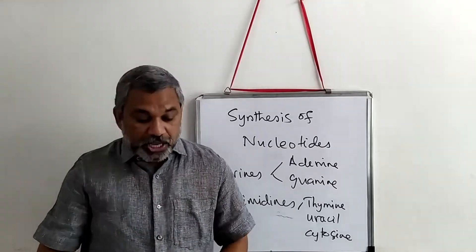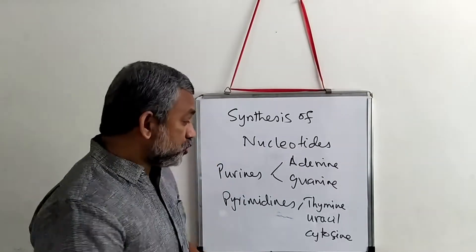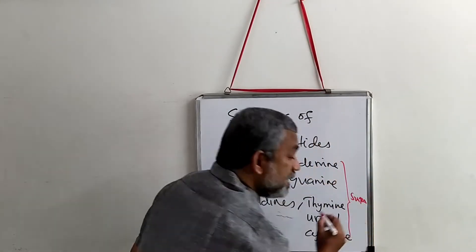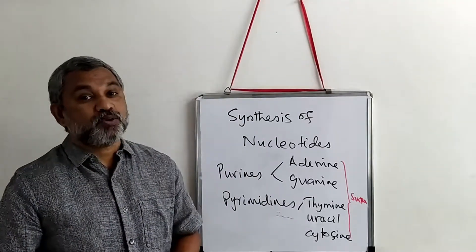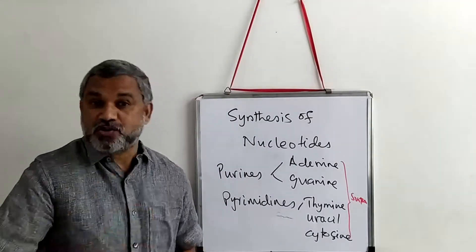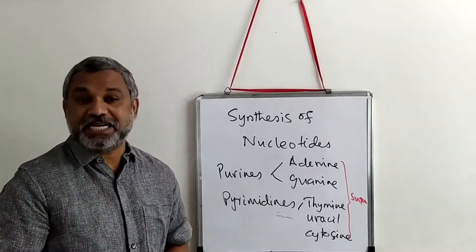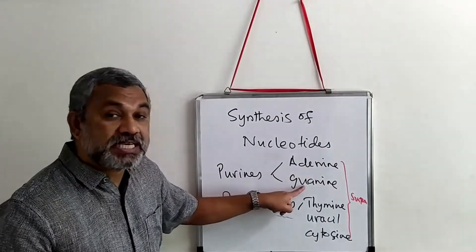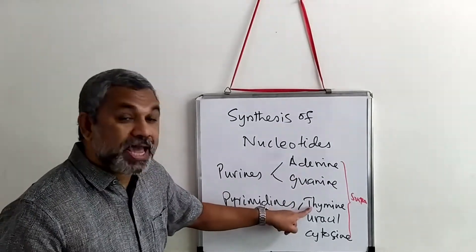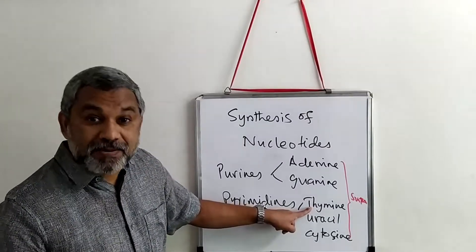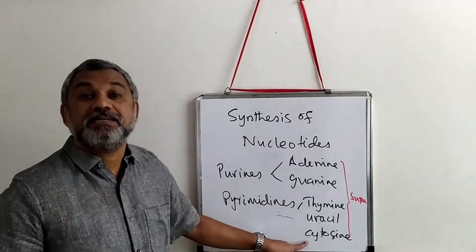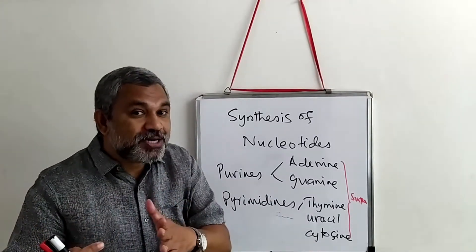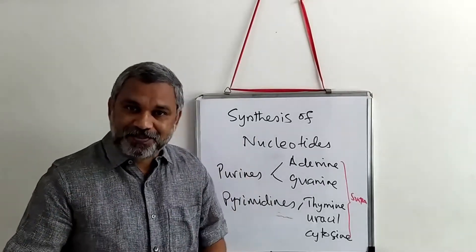If you add a sugar molecule to any of these bases — either a ribose sugar or a deoxyribose sugar — you get a nucleoside. The nucleoside of adenine is called adenosine, guanine gives guanosine, thymine gives thymidine, then uridine and cytidine.